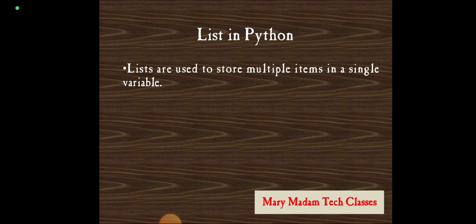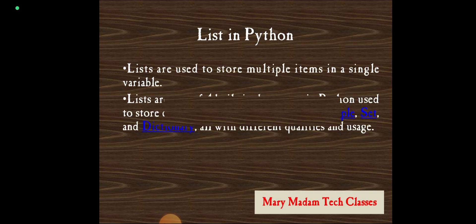Lists are used to store multiple items in a single variable. Lists are one of four built-in data types in Python used to store collections of data. The other three are tuple, set and dictionary, all with different qualities and usage.